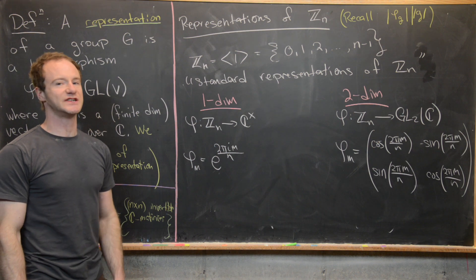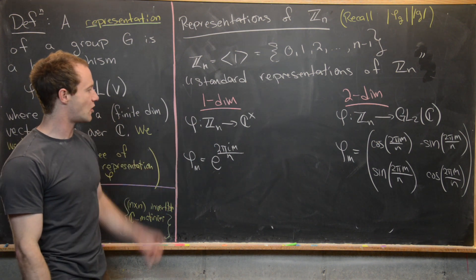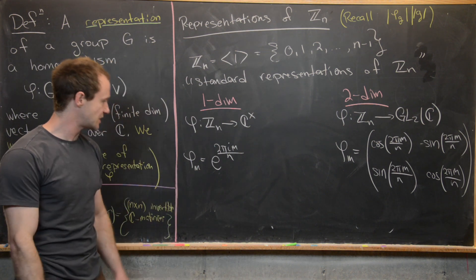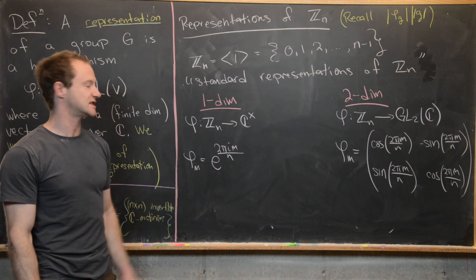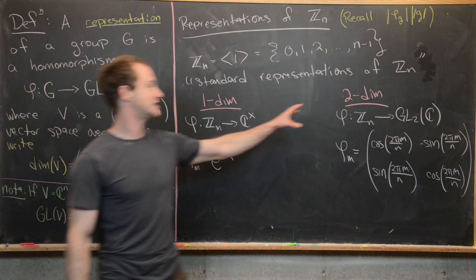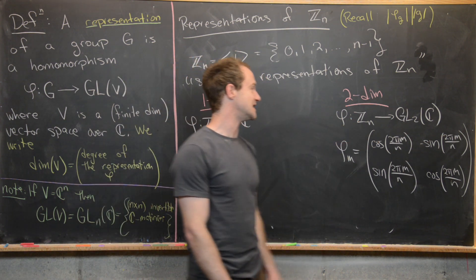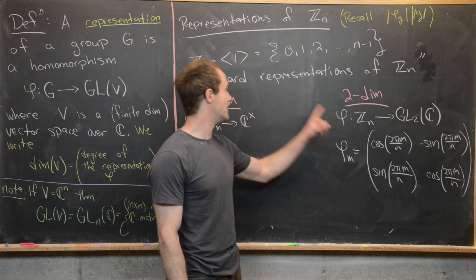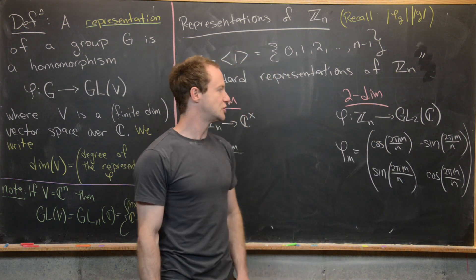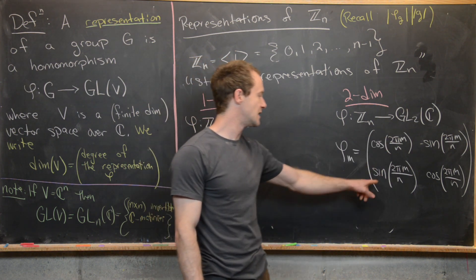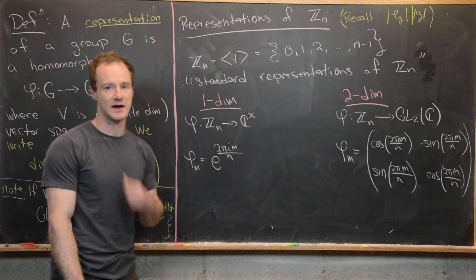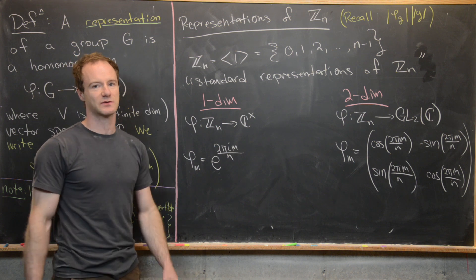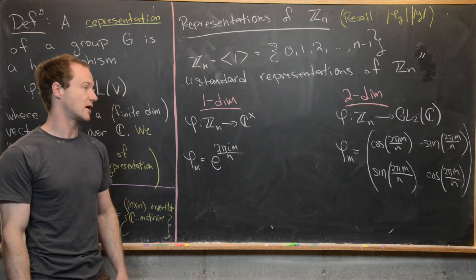To summarize: the standard one-dimensional representation of Z_n is the homomorphism from Z_n to C* sending m to e^(2πim/n). The two-dimensional representation is the homomorphism from Z_n to GL_2(C) sending m to the rotation matrix [[cos(2πm/n), -sin(2πm/n)], [sin(2πm/n), cos(2πm/n)]]. Whether and how these representations are related will be explored in upcoming videos.